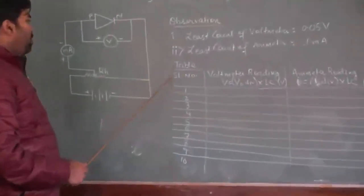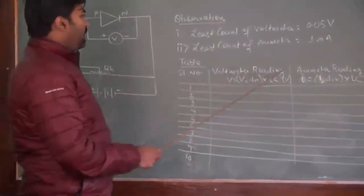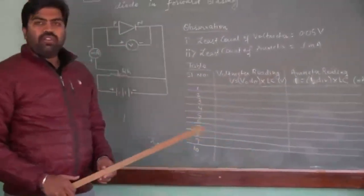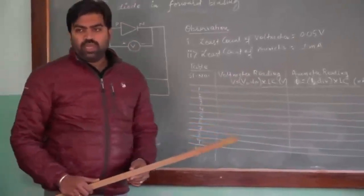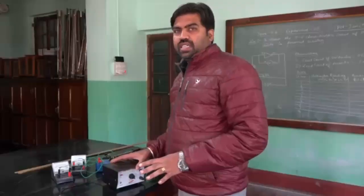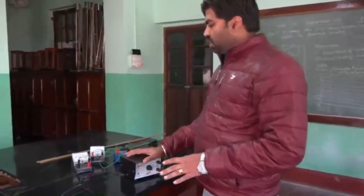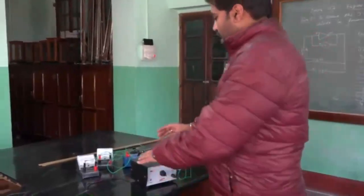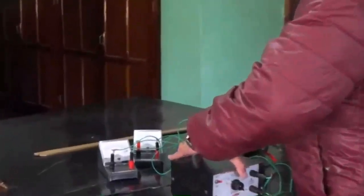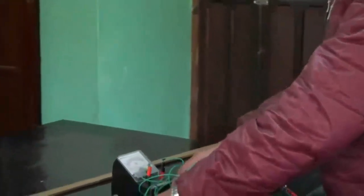We have drawn a table with serial number, voltmeter reading, and ammeter reading, as we have done for Ohm's law in term 1. Let us assemble our apparatus according to our circuit diagram. As you can see, we have already assembled everything according to our circuit diagram.